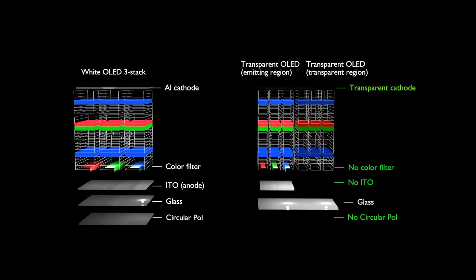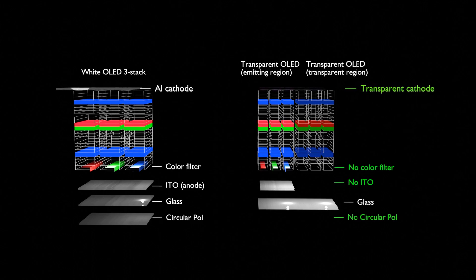In addition, since a transparent cathode is used instead of a mirror like aluminum, the external light reflection by the metal electrode is weakened and the circular polarizer can be removed accordingly.